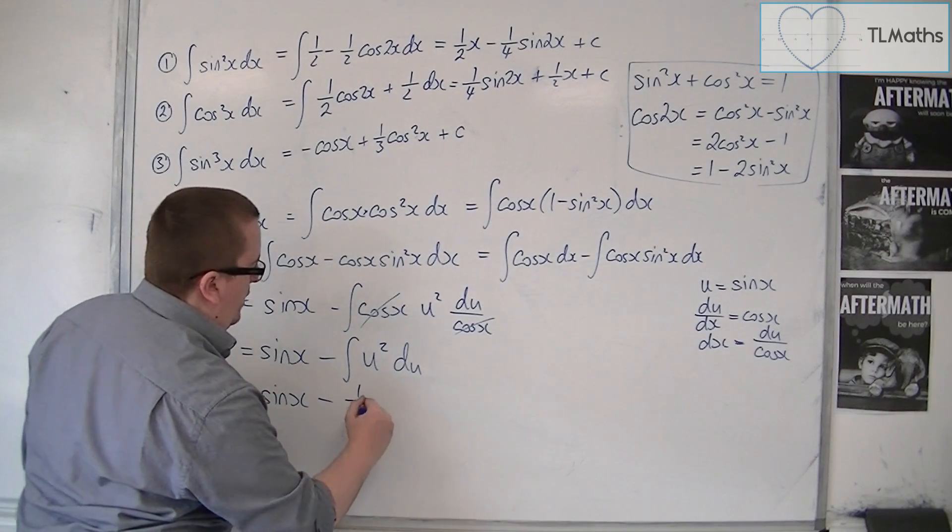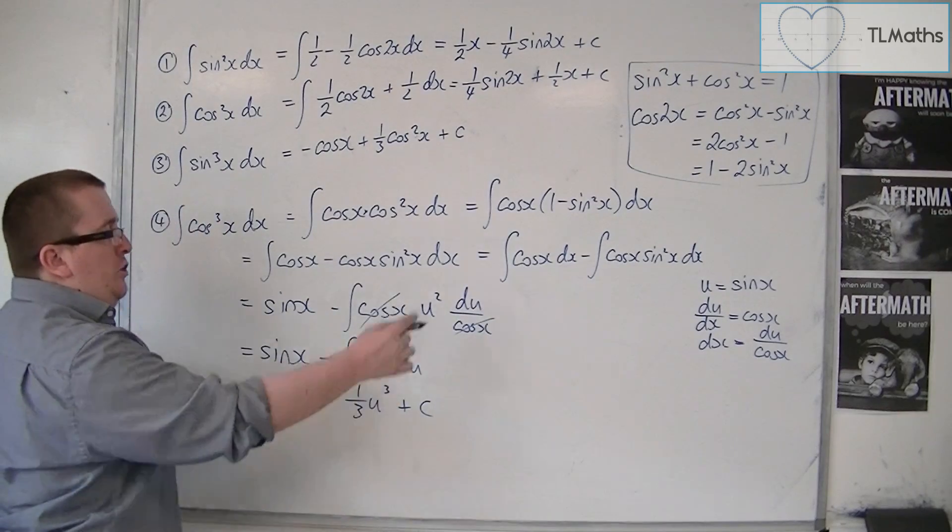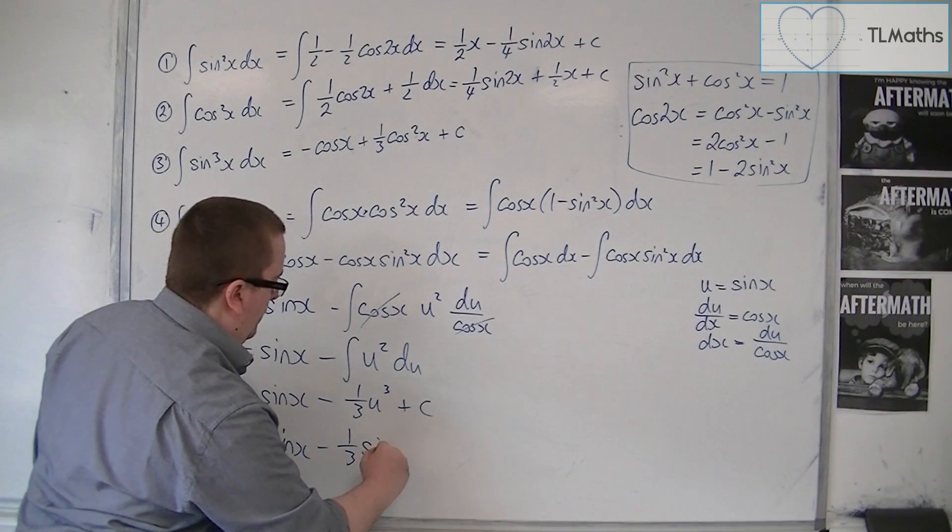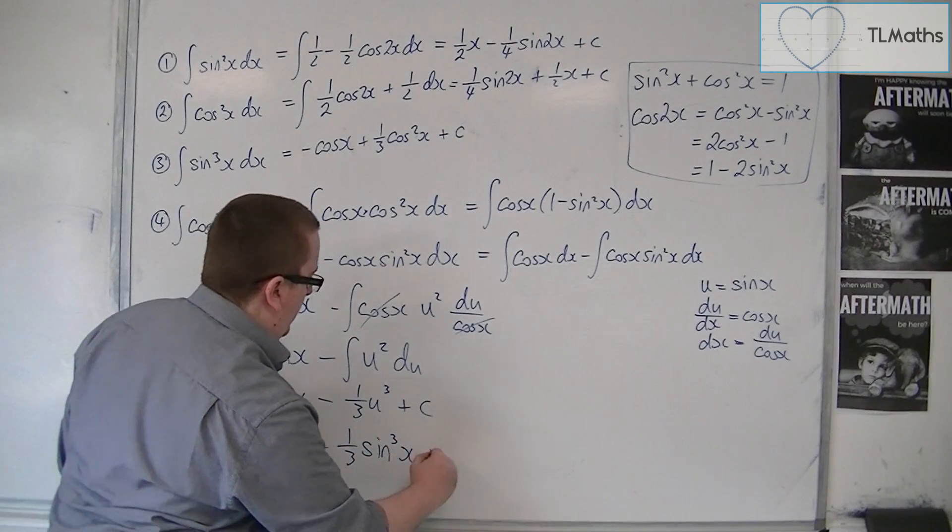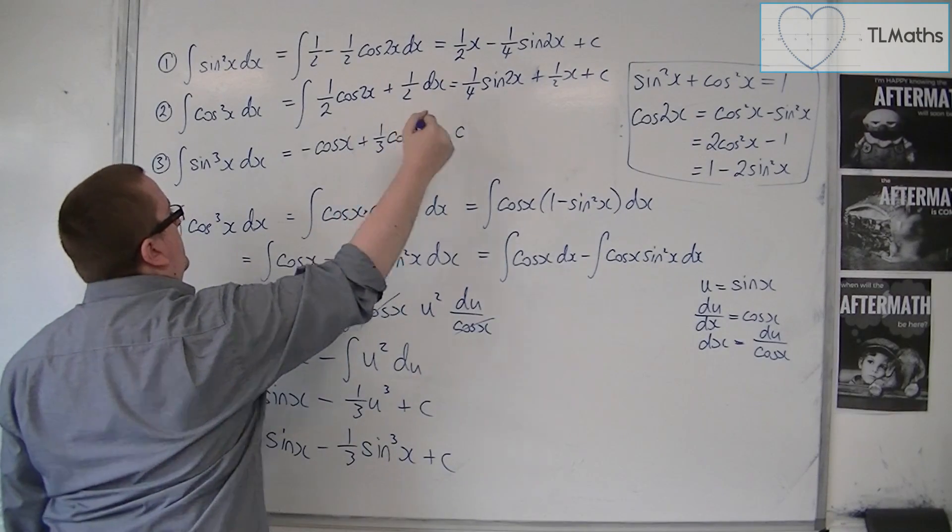So that's one third u cubed plus c. And then you want to put your u back into the sinx. So sinx minus a third sin cubed x plus c. That was a cube there, wasn't it?